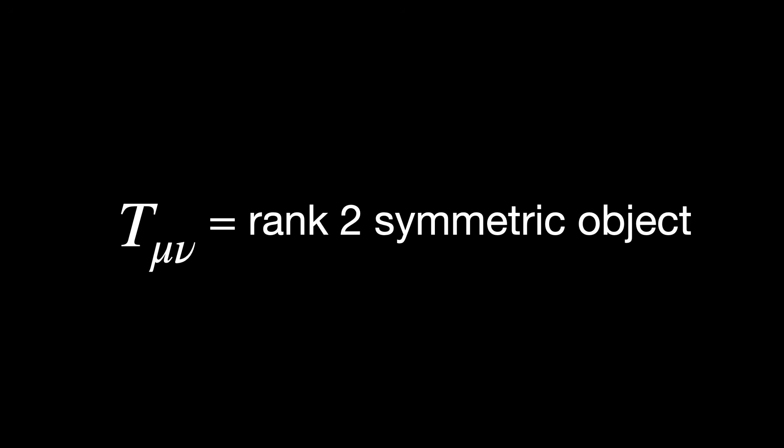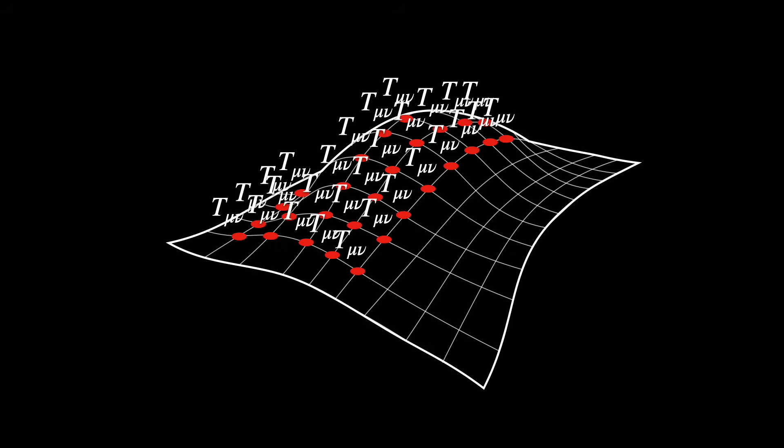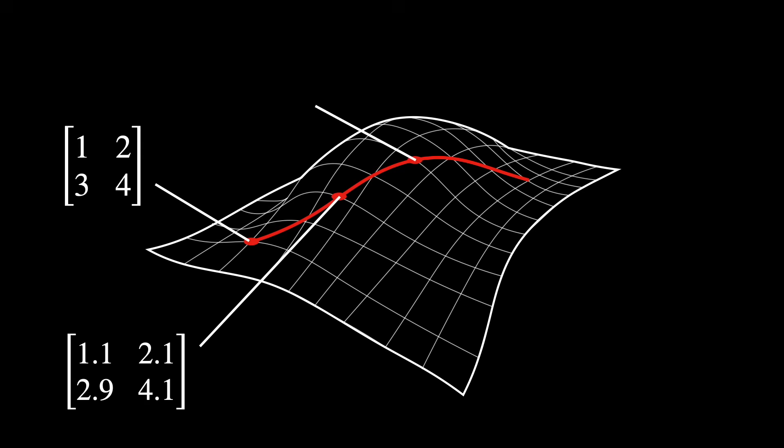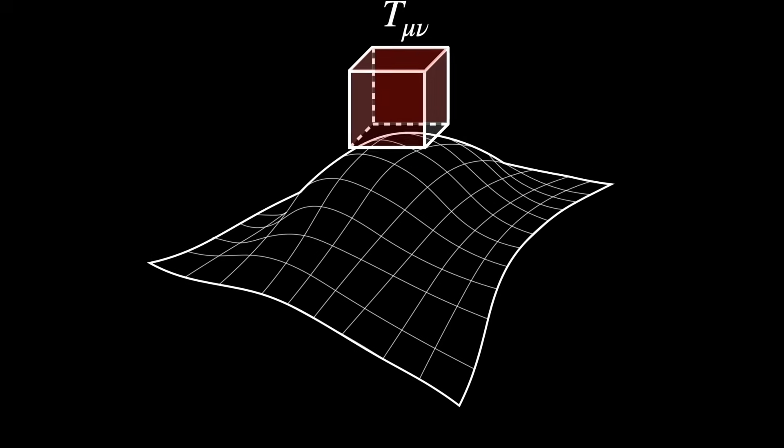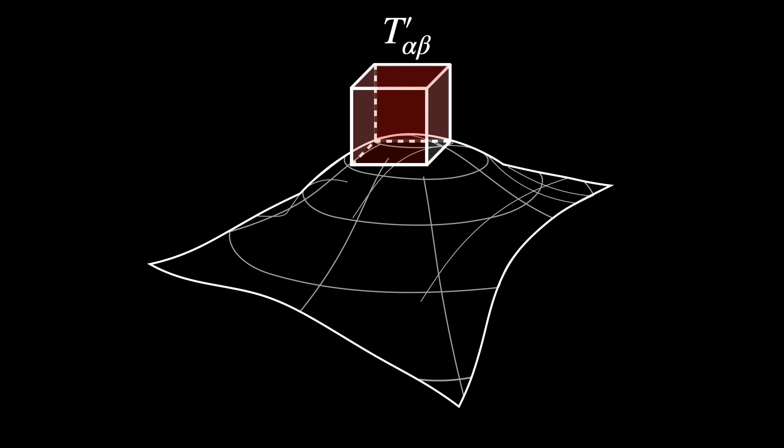This tensor, T mu nu, is described as a rank-2 symmetric object, two indices, defined on a differentiable manifold. It is defined point-wise. Its components vary smoothly with the coordinates, and it is covariant under coordinate transformation. It doesn't depend on the local coordinate choice.